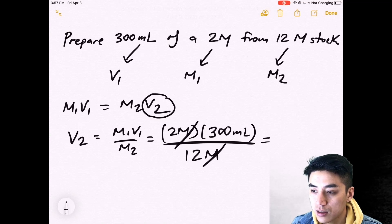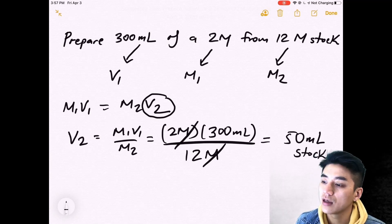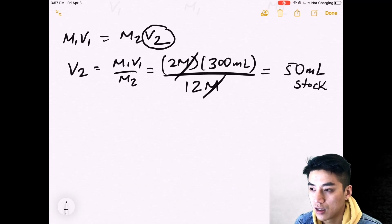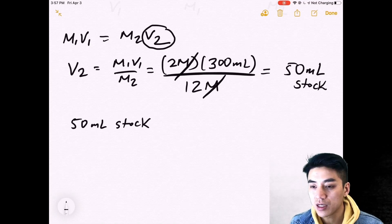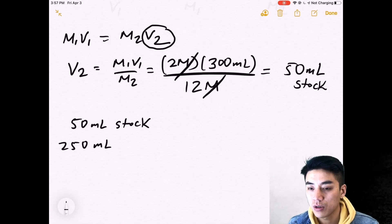Cancel out your molarity units. And what do we got here? This is 50 milliliters of stock. So I know that I have to use 50 milliliters of stock. And the remainder has to be water. The remainder has to be 250 of water because you were asked to prepare in total something that was 300 milliliters.